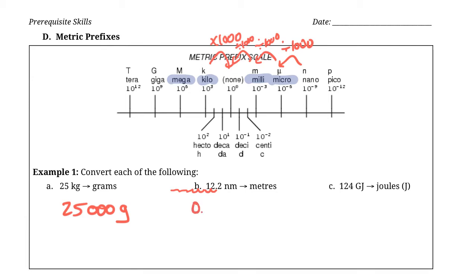After moving the decimal nine places we end up with seven zeros in front — giving us 0.0000000122. We can double-check by counting nine decimal places from the original position — yes, we end up in the right spot. Since we end up with a very small number like this, it's always good to write it in scientific notation. So we can express this as 1.22 × 10 to the negative 8 meters.